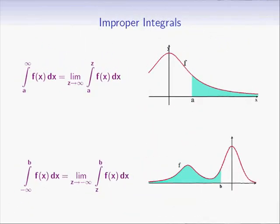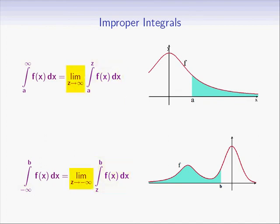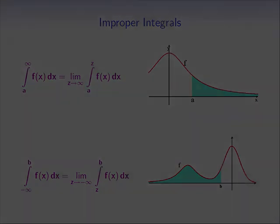To summarize, improper integrals on unbounded intervals are defined as limits. To compute them, first replace the infinite bound by a z, compute the integral, and then take the limit as z goes to positive or negative infinity. We're going to show you some problems you can use to practice this material. Thanks for watching, and I'll see you next time.